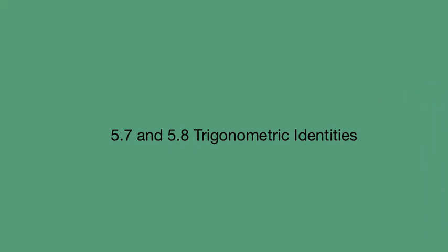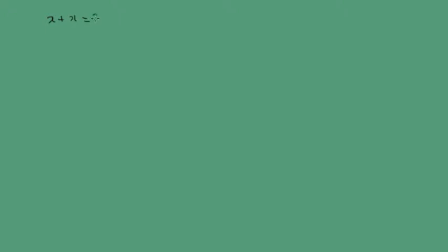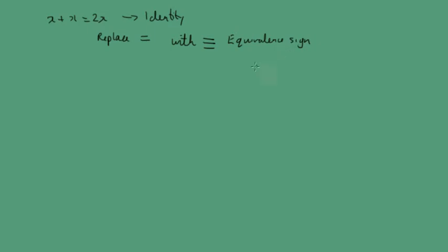Today we're going to be looking at trigonometric identities. So what does that mean? If we think about x plus x equals 2x, this is an identity because it's something that's true for all values of x. When we have an identity, we replace the equal sign with an equivalent sign. The two most common trigonometric identities are: sine squared x plus cosine squared x equals 1.